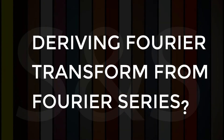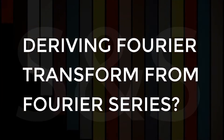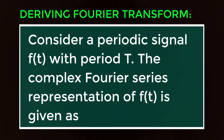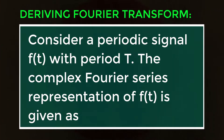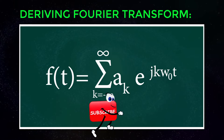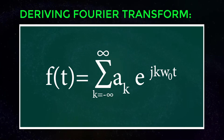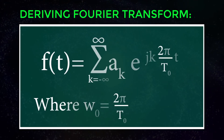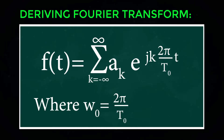Deriving Fourier transform from Fourier series. Consider a periodic signal f(t) with period T. The complex Fourier series representation of f(t) is given as f(t) = Σ (k = -∞ to ∞) of aₖ · exp(j·k·ω₀·t), which equals Σ (k = -∞ to ∞) of aₖ · exp(j·k·2π/T₀·t), where ω₀ = 2π/T₀.